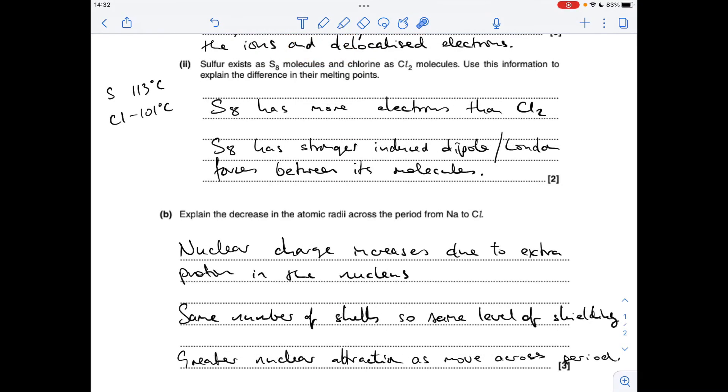For the final part of the question, we've got to explain the difference in the atomic radii across the period from sodium to chlorine. There are three key things we need to talk about. First is nuclear charge, so the nuclear charge increases due to the extra proton in the nucleus.